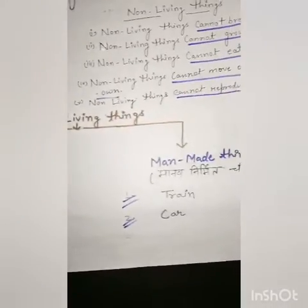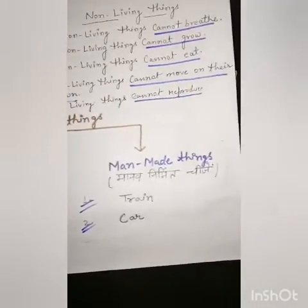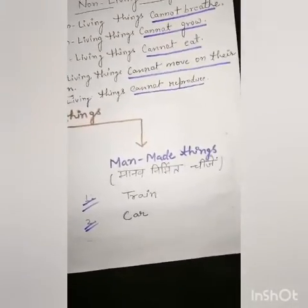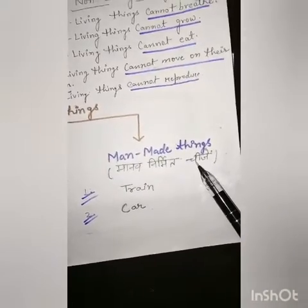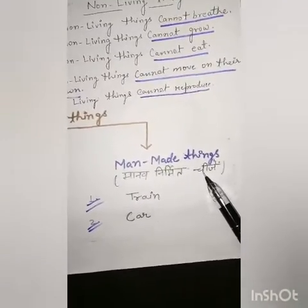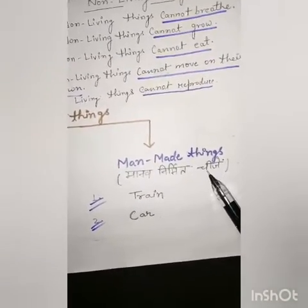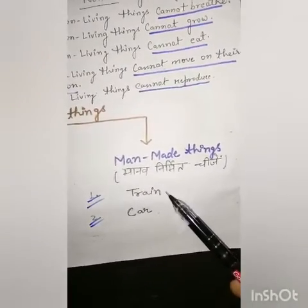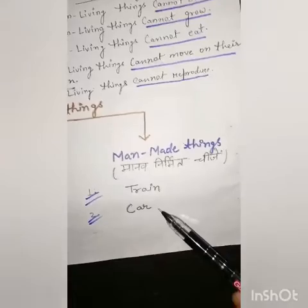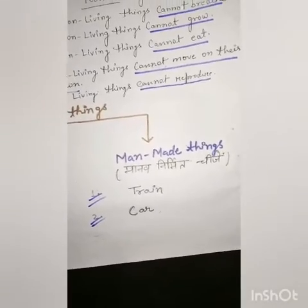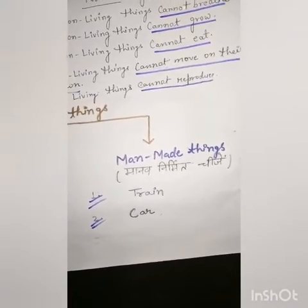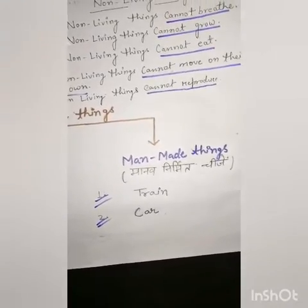The second type is man-made things — yani maanav nirmit cheezein. Such as train, car, toys, table, fan, paint, pencil, etc.